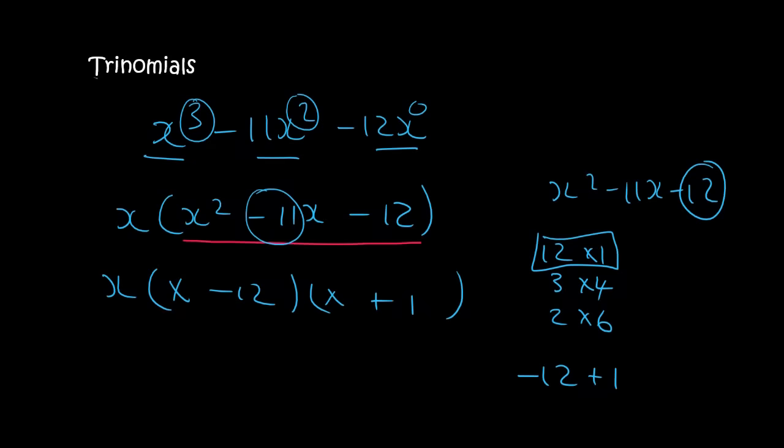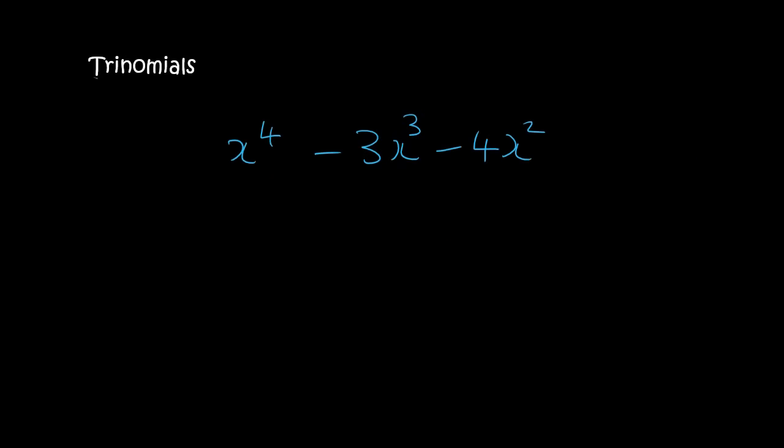Why didn't I do that in the previous trinomials? Because I had already designed them in such a way that you couldn't take anything out. So, here we go. In these three terms, you can take out an x squared, because that's got two x's, that's got three, and that's got four. So, we take out an x squared, and then you're left with x squared minus 3x minus 4. This is a trinomial.